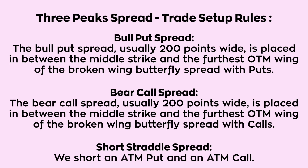The bull put spread, usually 200 points wide, is placed in between the middle strike and the furthest out-of-the-money wing of the broken wing butterfly spread with puts. The bear call spread, usually 200 points wide, is placed in between the middle strike and the furthest out-of-the-money wing with calls. We short an at-the-money put and an at-the-money call. All options should be of the same expiry, 45 to 60 days to expiry. Please go through the setup rules multiple times to get a sense of the strategy.